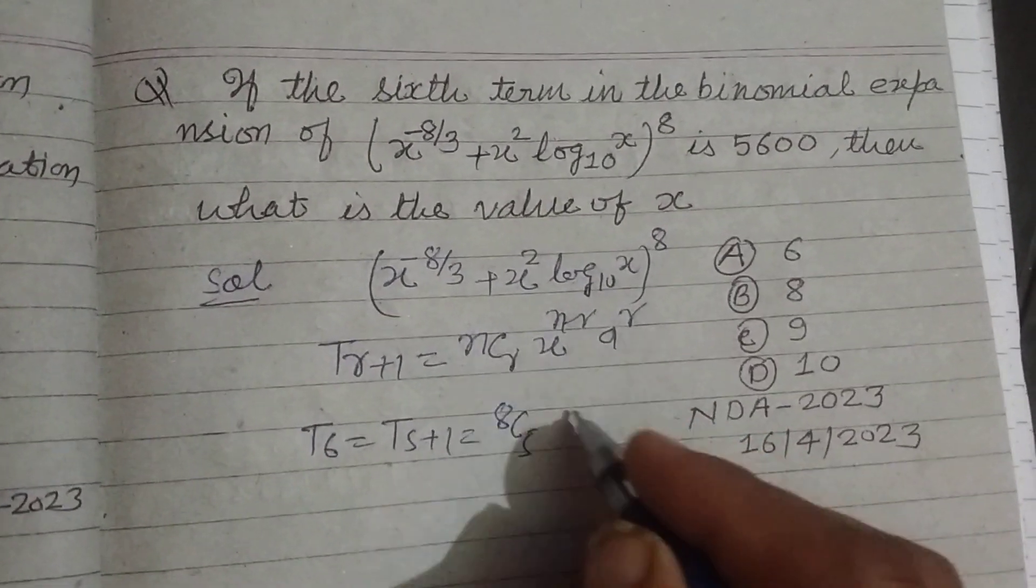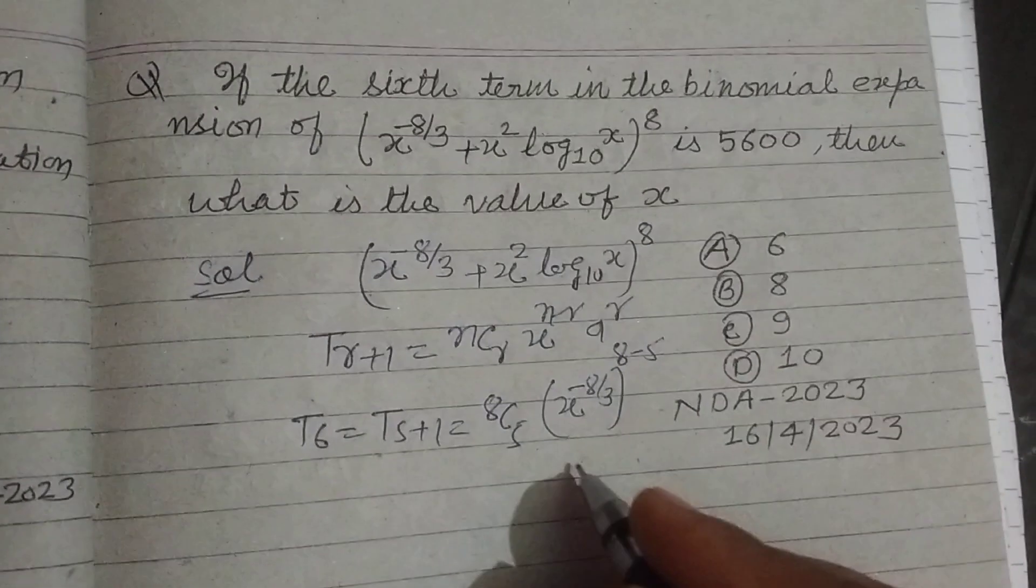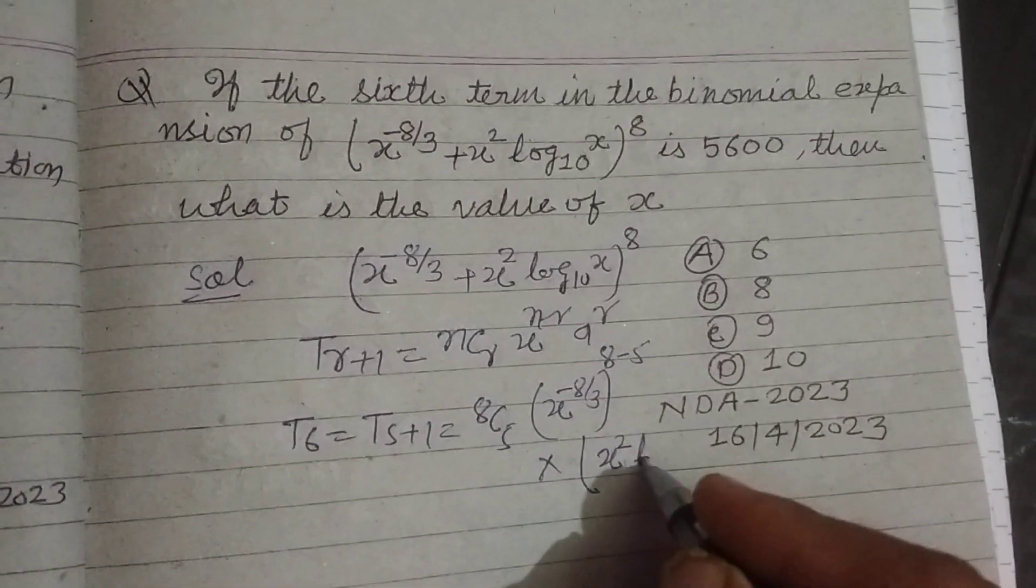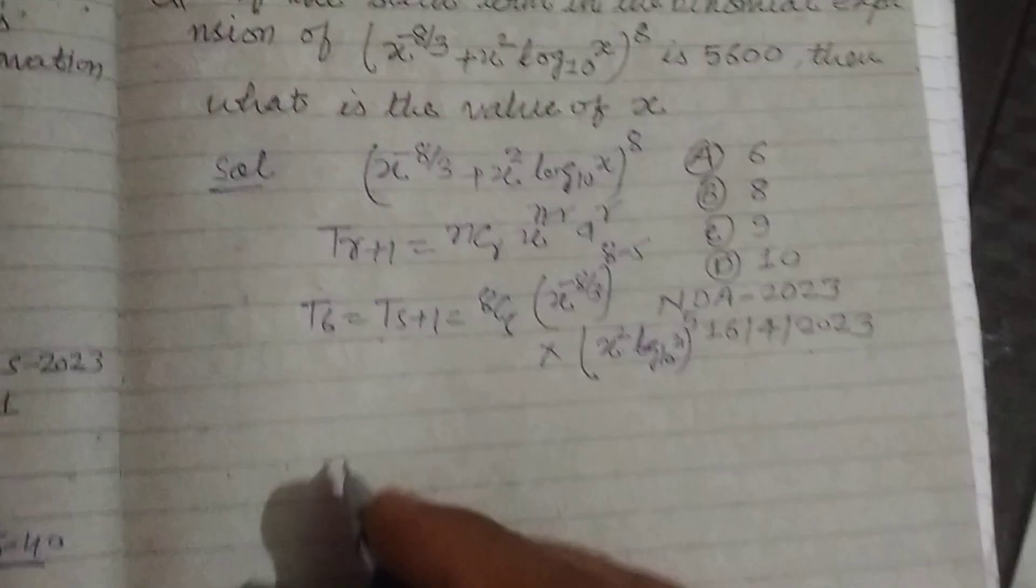x^(-8/3) raised to (8-5) times x squared log base 10 of x raised to the power 5.